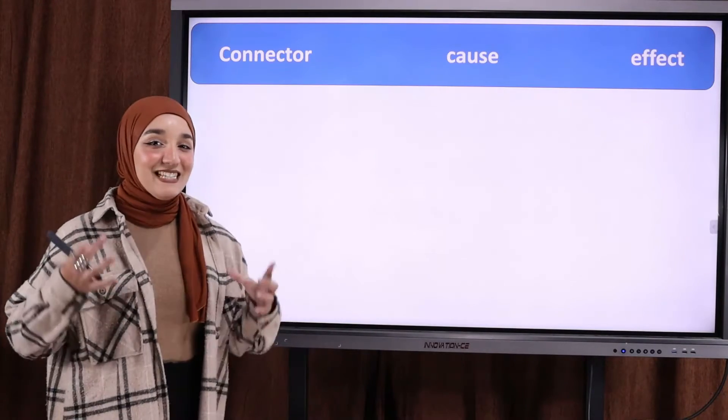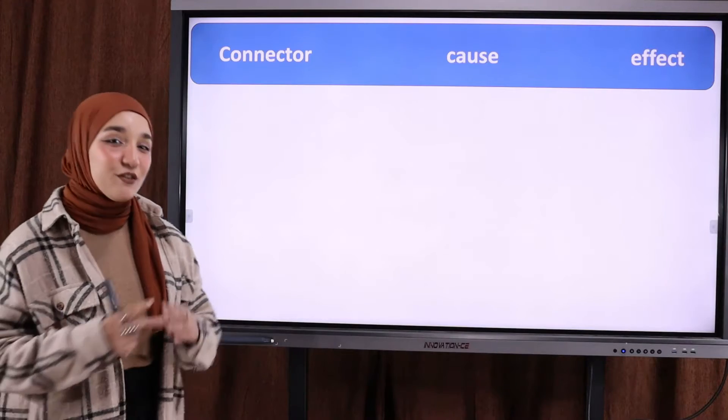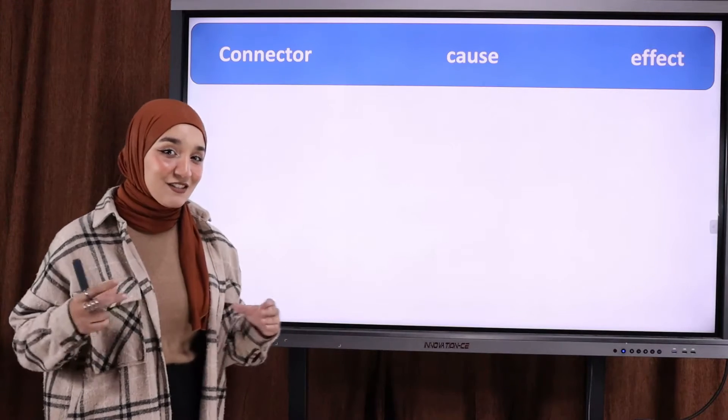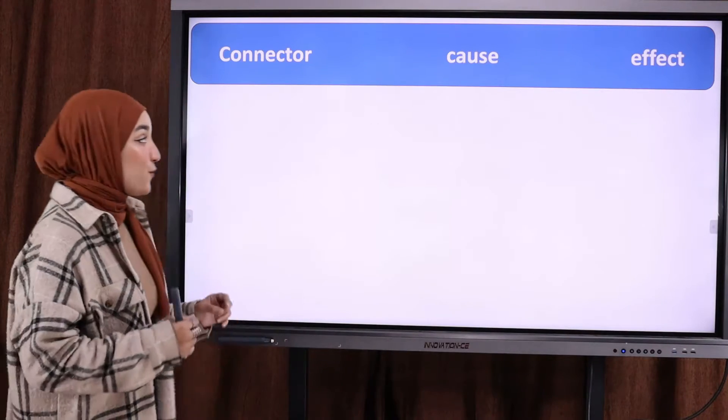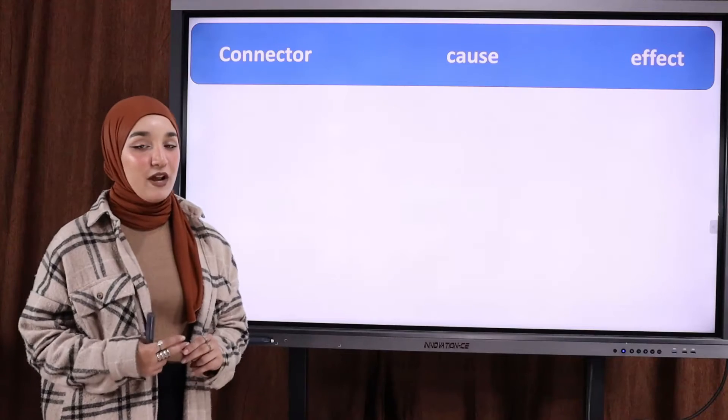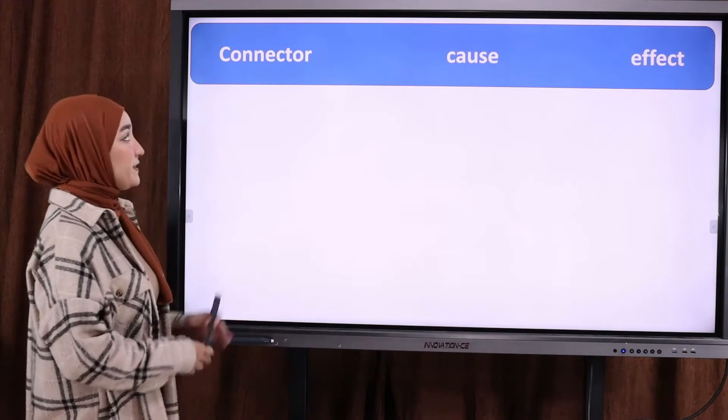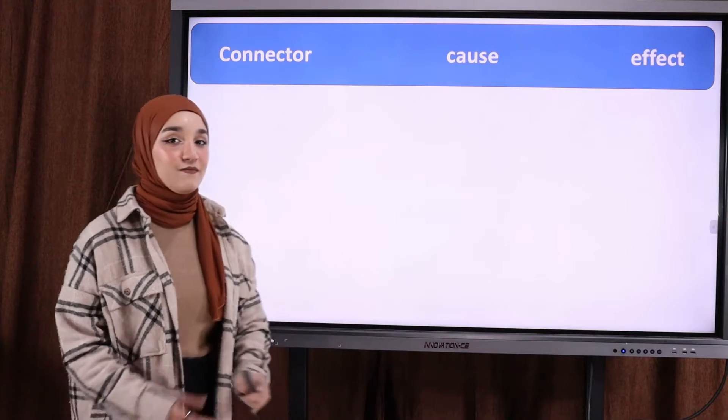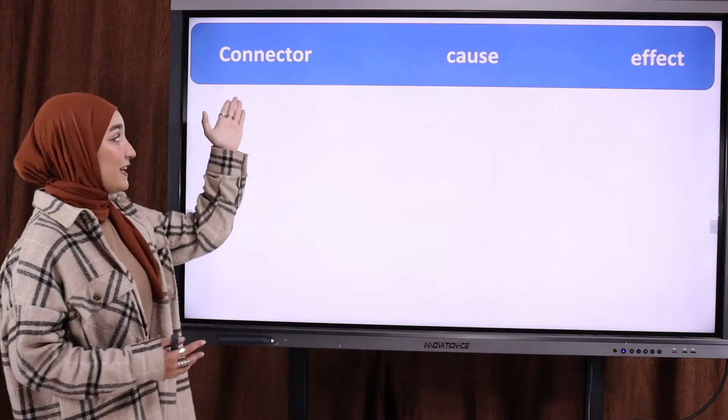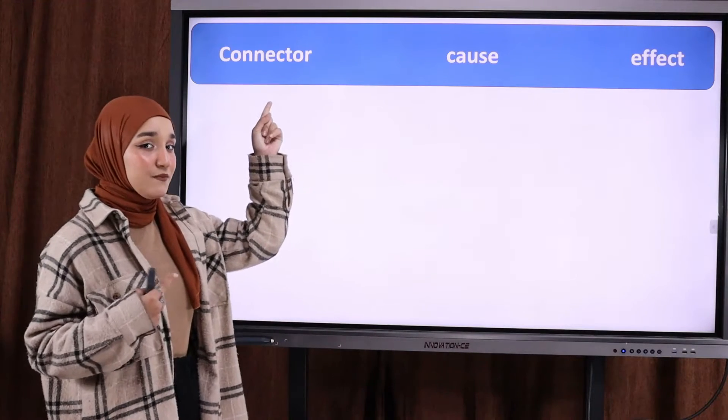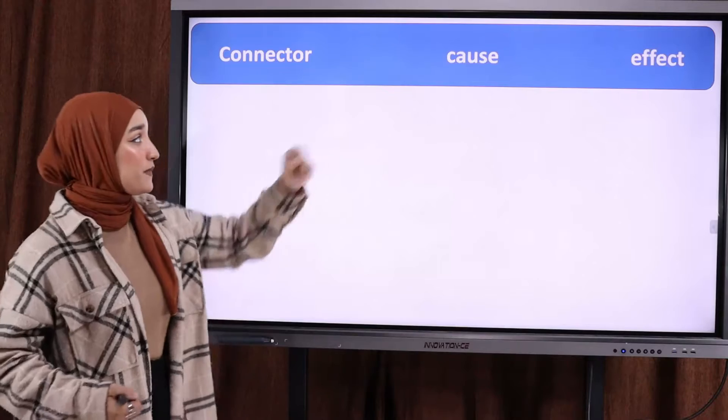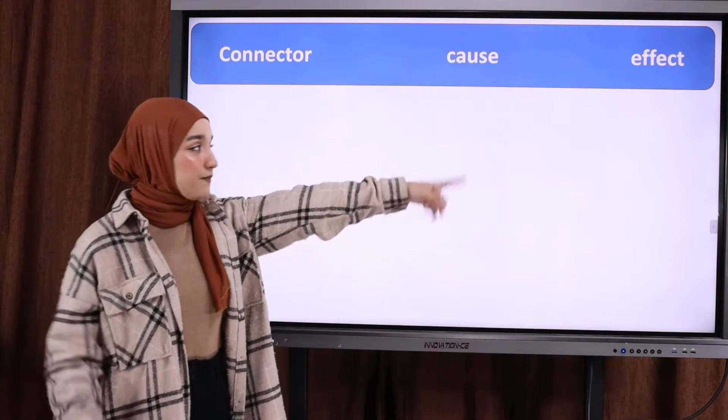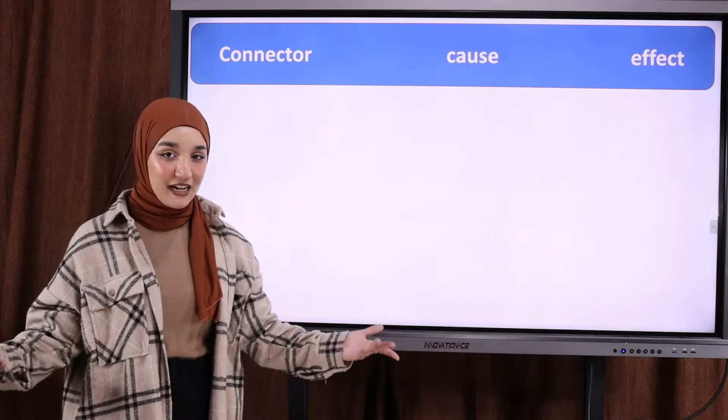Let's talk about the sentence structure. We have two different ways. The first way is: connector, cause, effect. We start with the connector. Cause, effect.